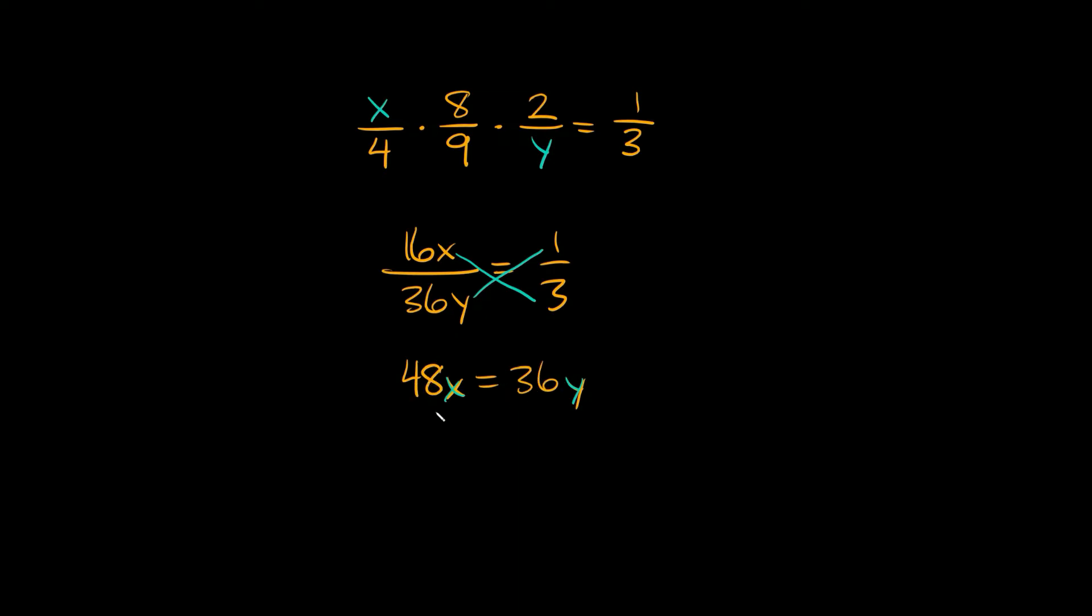So 48 and 36 both happen to be divisible by 12. So let's divide both of these by 12. So 48 divided by 12 is equal to 4 and then we have our x right there and that's equal to 36 divided by 12, which is equal to 3, 3y.